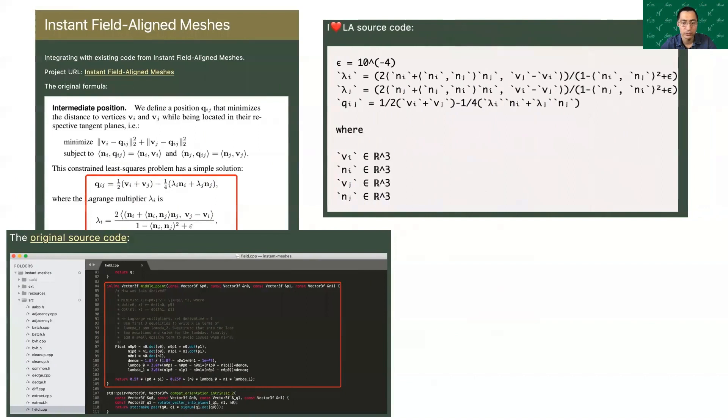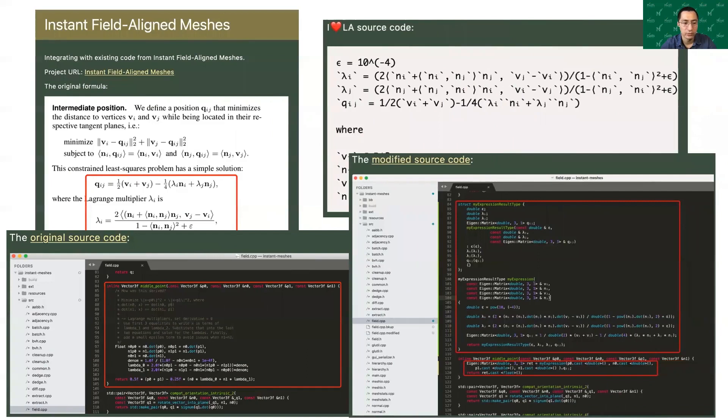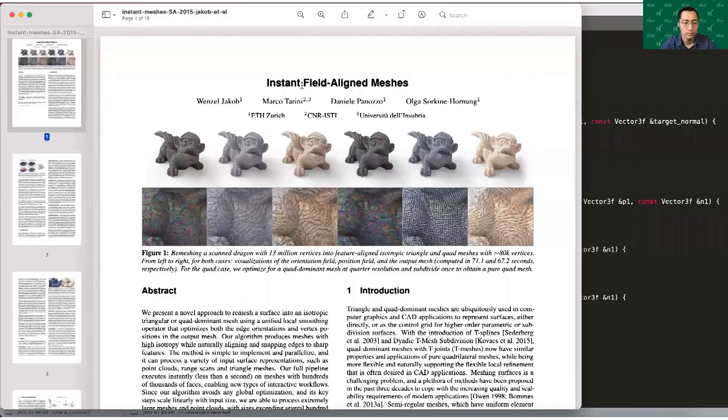For each case, we show the original formula, the original source code, I❤LA implementation, and the modified source code with I❤LA output. We check that the results are identical to the original implementation.